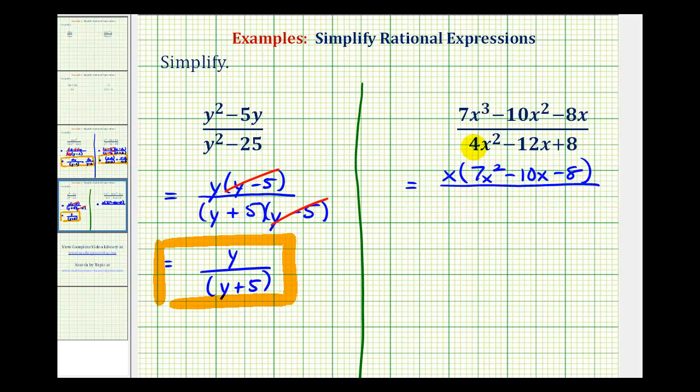For the denominator, notice how each term shares a common factor of 4. We'll factor out 4, leaving us with the quantity x squared minus 3x plus 2.